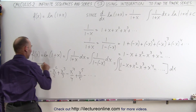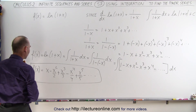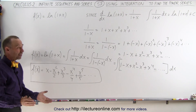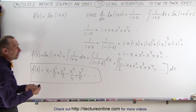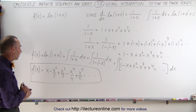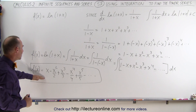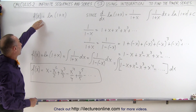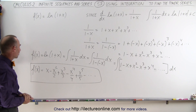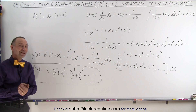This becomes the power series of our original function. The constant of integration can be any value, and unless we're given initial conditions we cannot determine it. So here we have the power series of f of x equals the natural log of 1 plus x, and that's how it's done.